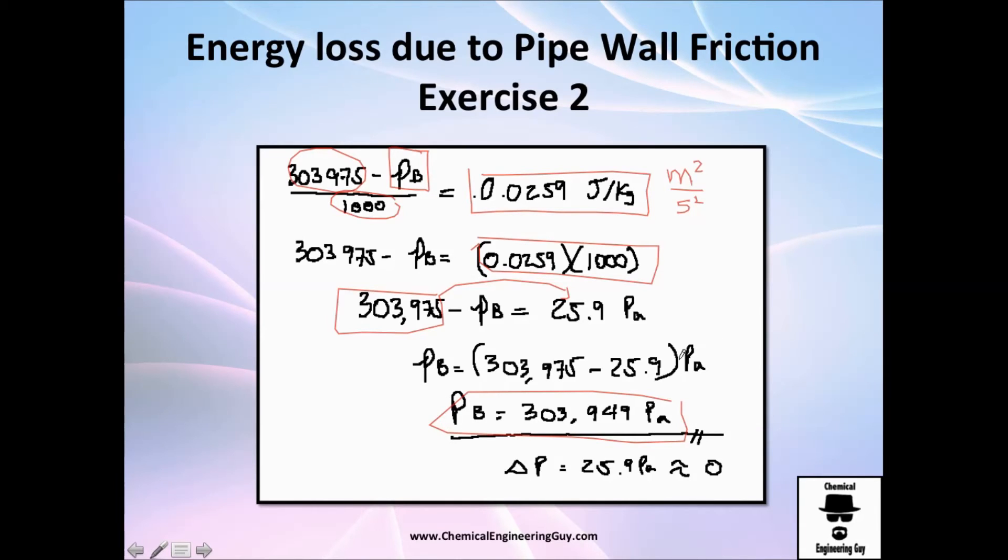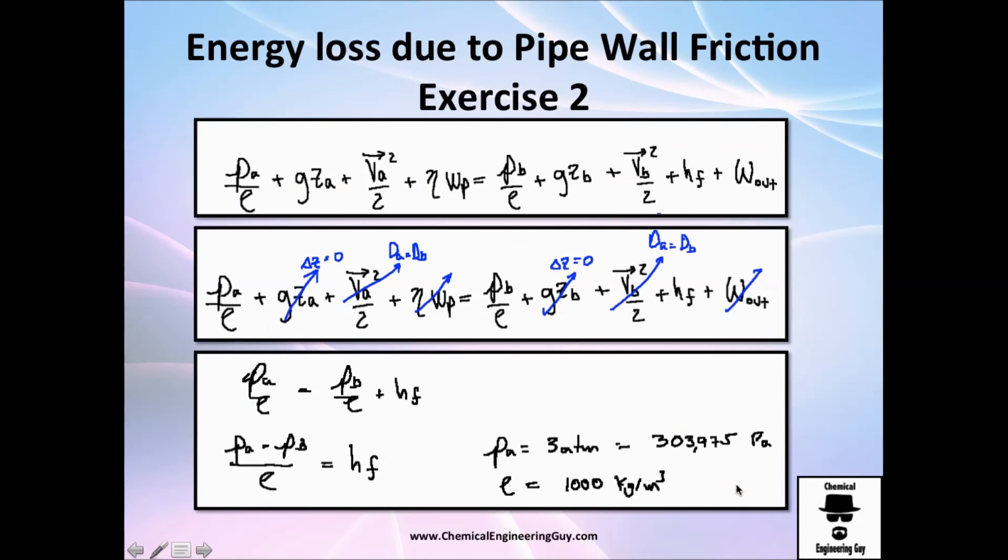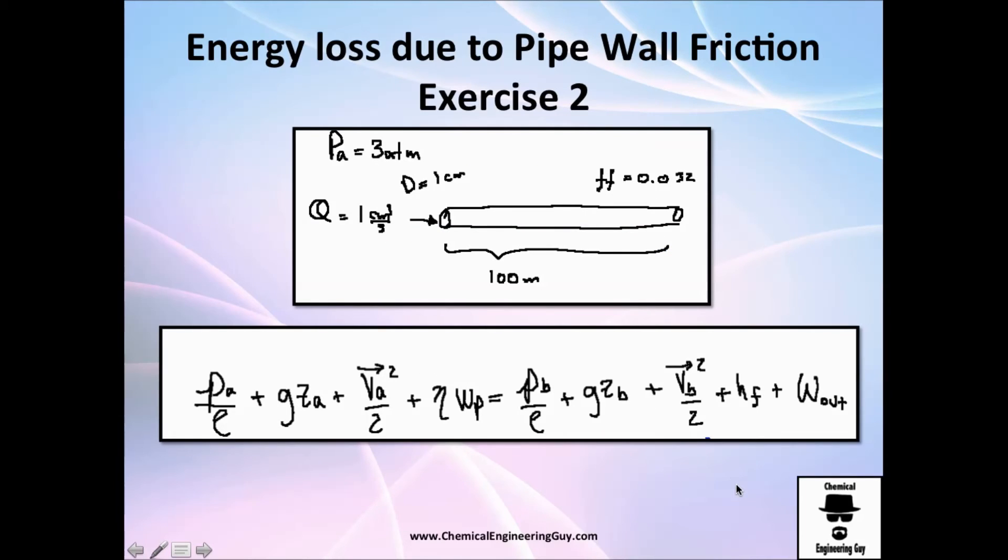So guys, in this case, you can see, it's not that big the energy loss. We got a 25.9 Pascal, which is almost nothing, guys. So it's good. This is due to that we have a very small flow here. We have a small flow. And the diameter is relatively small.